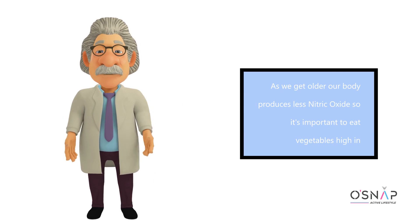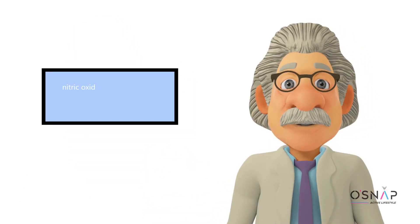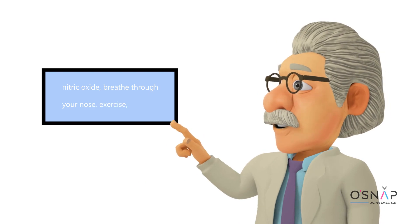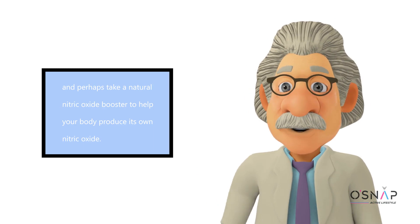As we get older our body produces less nitric oxide, so it's important to eat vegetables high in nitric oxide, breathe through your nose, exercise, and perhaps take a natural nitric oxide booster to help your body produce its own nitric oxide.